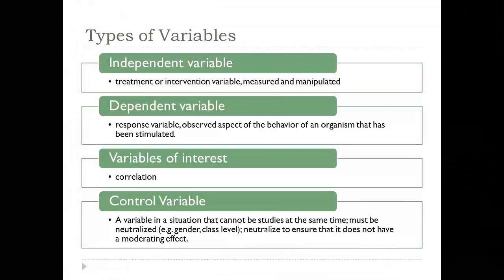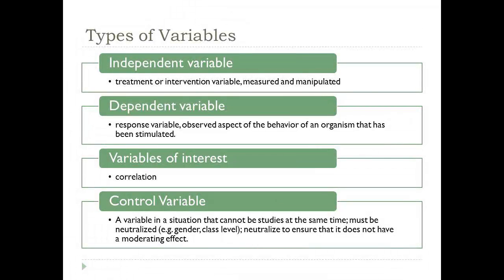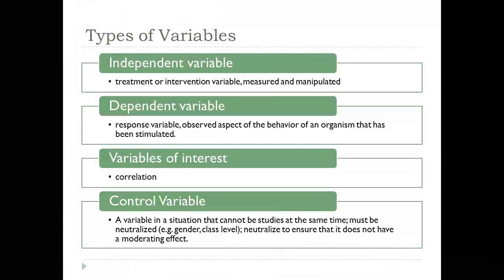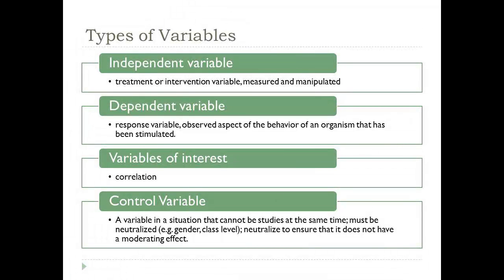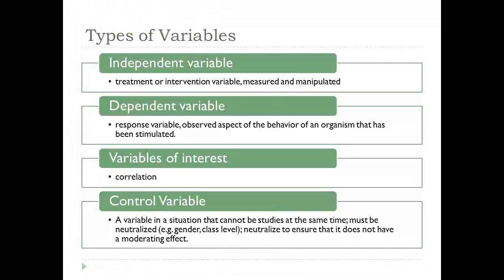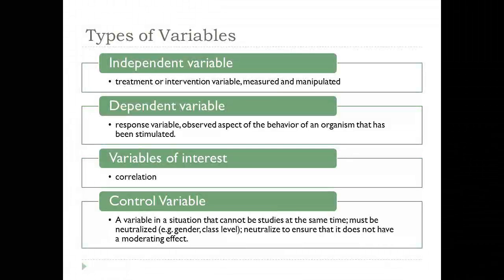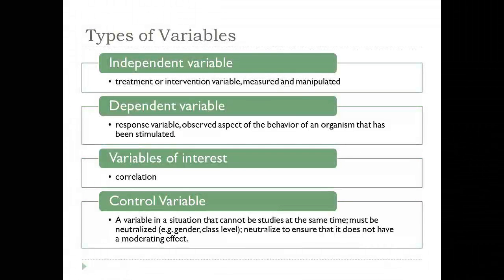So thus far, just to review: we've talked about independent and dependent variables. The independent variable is the variable that's being manipulated — the variable you're looking to have an effect on the dependent variable, which is the response variable. These are used in experimental and causal comparative studies. If you have a regression study, you use the term predictor and criterion variable. If you're doing a simple correlation study, you have variables of interest — simply the variables you're looking to see if there's a relationship between.